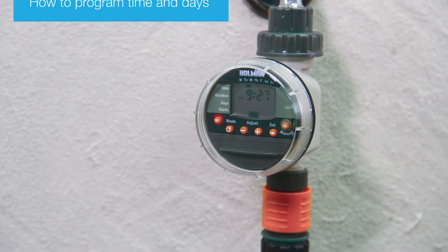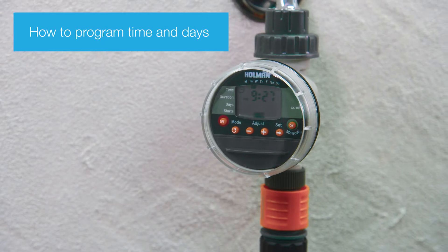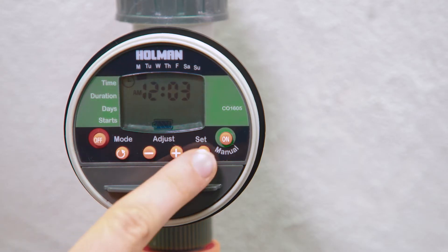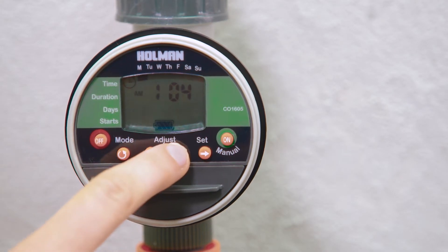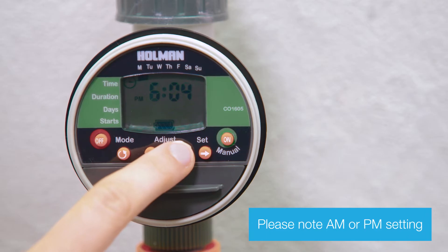To program the 1605 tap timer, start by setting the time and day. Press set. The hour will start flashing. Use the plus and minus buttons to adjust. Remember to select a.m. or p.m.